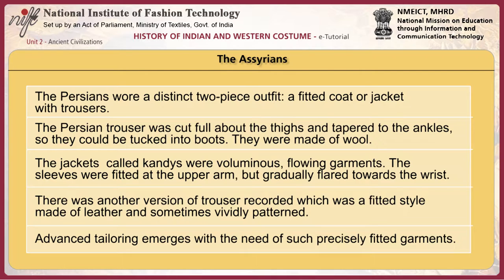The Persian trouser was cut full about the thighs and tapered to the ankles, so they could be tucked into boots. They were made of wool. The jackets, called candies, were voluminous flowing garments. The sleeves were fitted at the upper arm but gradually flared towards the wrist. There was another version of the trouser: a fitted style made of leather and sometimes vividly patterned. Advanced tailoring emerged with the need for such precisely fitted garments.